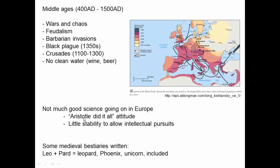There was also an attitude that Aristotle had done it all — he was so smart and his Scale of Nature made such sense that there was no reason to look at nature; you just read his book. Without stability, people couldn't really have intellectual pursuits, so for a thousand years Europe made little intellectual progress. A few medieval bestiaries were written, but they included things like 'when a leo mates with a pard they make a leopard,' alongside the phoenix and unicorn right next to horses and cows.